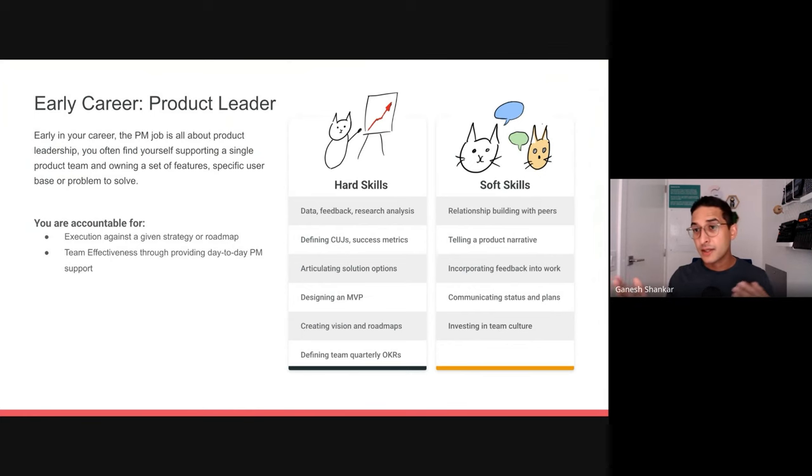On the soft skills side to complement these, you're going to be doing a lot of relationship building with your peers. You're trying to form that mind meld with your engineering or design peers. You're going to get a lot of practice at telling a product narrative, and that's going to complement your vision deck. You'll start working on incorporating feedback into work. I always say share work early, and then you want to actually get really good at listening to what people say and learning how to incorporate it. And then communicating just the status and plans of your team, build more visibility into what they're doing. Finally, you're going to start investing in team culture. At this stage, there's probably things like ensuring there's some team health going on. There might be stand-ups or retrospectives or even just celebrating the moments where you succeed or fail.